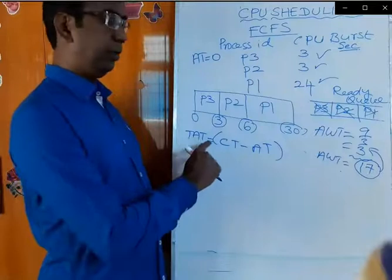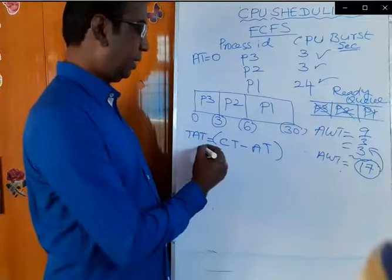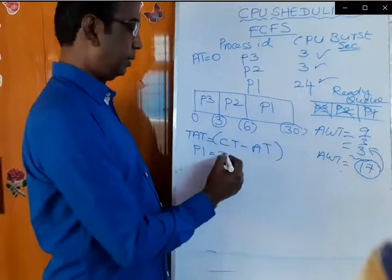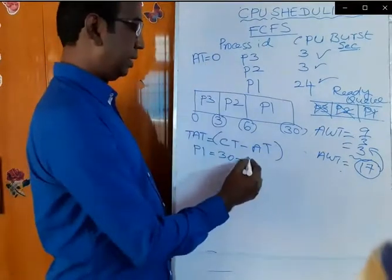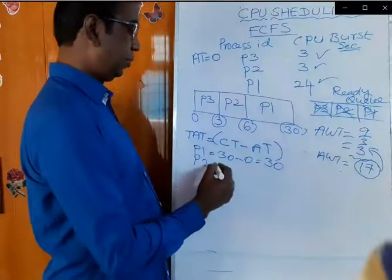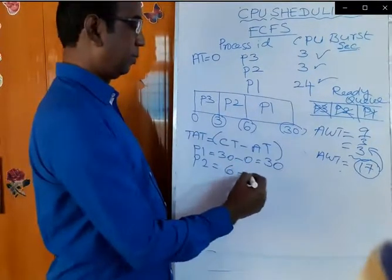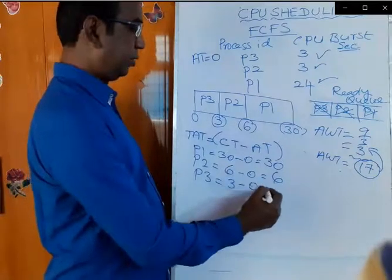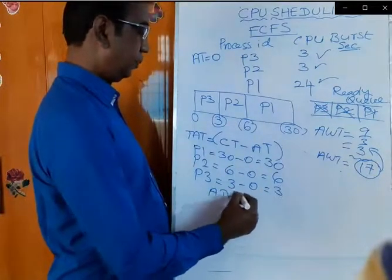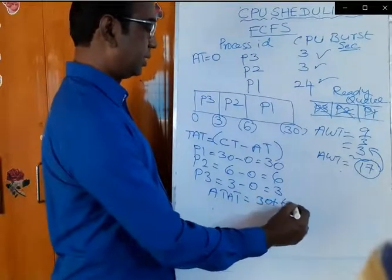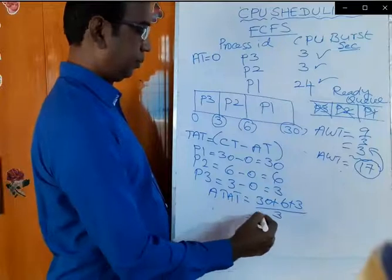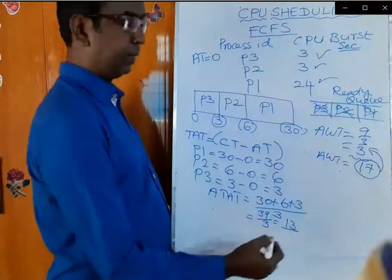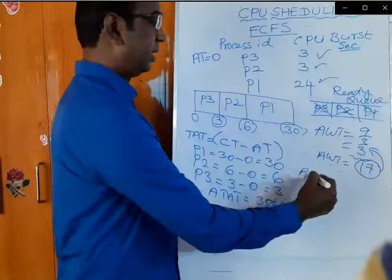Now, what is the formula for turnaround time? Turnaround time equals completion time minus arrival time. For process P1: completion time is 30, minus arrival time 0, equals 30. For process P2: completion time is 6, minus 0, equals 6. For process P3: completion time is 3, minus 0, equals 3. Average turnaround time is 30 plus 6 plus 3 divided by 3, which equals 39 divided by 3, equal to 13.